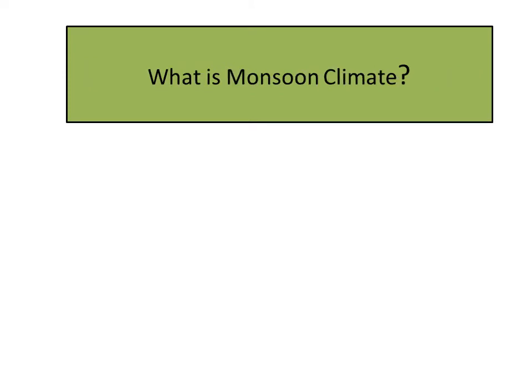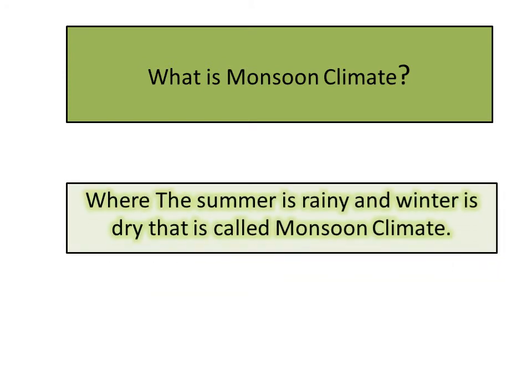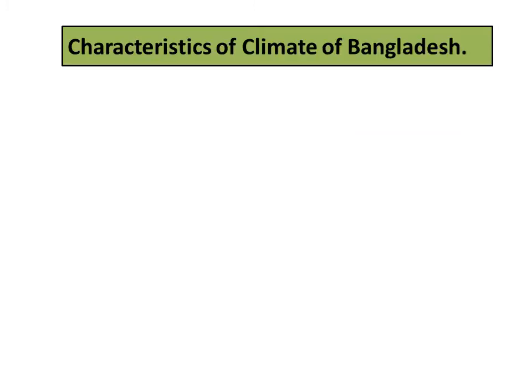What is monsoon climate, students? Where the summer is rainy and the winter is dry — that is called monsoon climate.